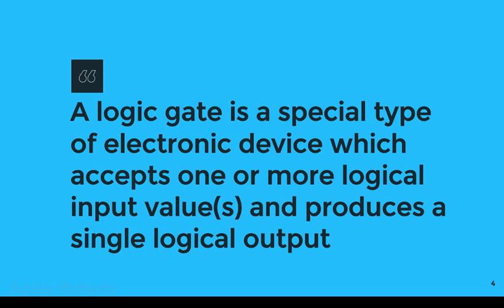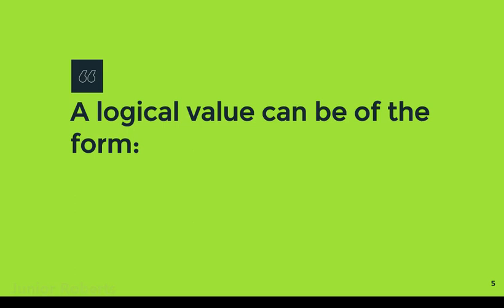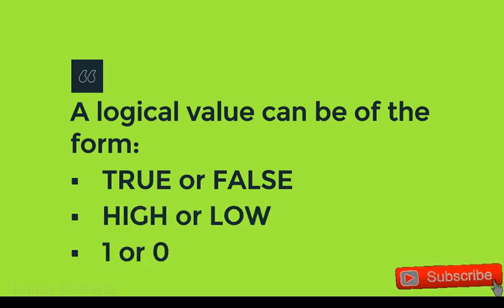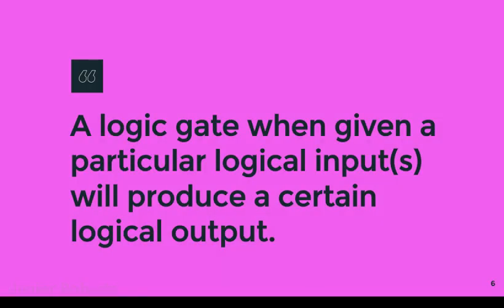A logic gate is a special type of electronic device which accepts one or more logical input values and produces a single logical output value. A logical value can be of the form true or false, high or low, or one or zero. Typically in electronics we most focus on one or zero as our logical input. A logic gate, when given a particular logical input or inputs, will produce a certain logical output.